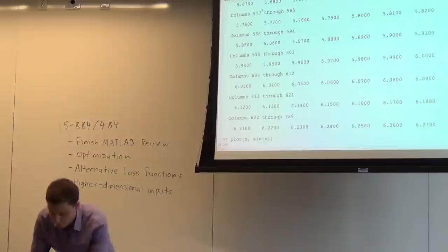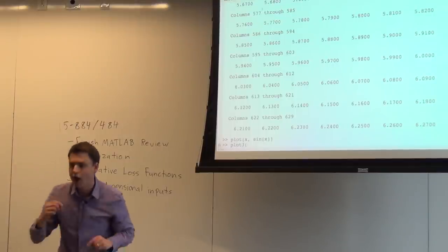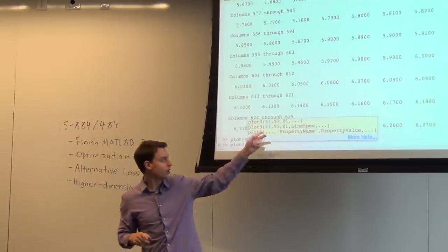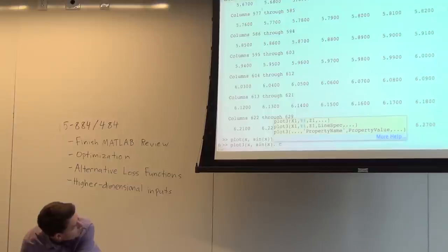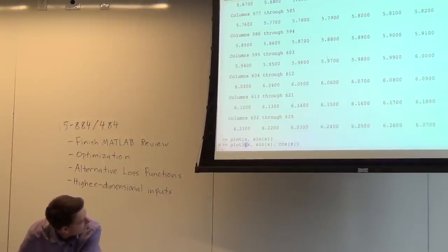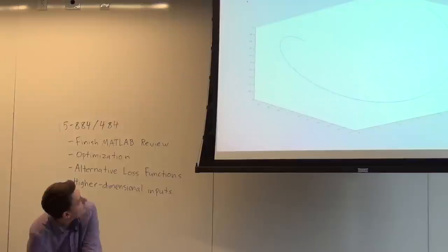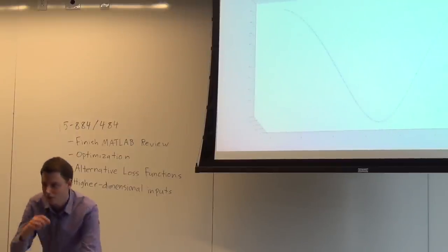You can also do three-dimensional plots. plot3 draws a 3D line — it's not for drawing surfaces, it's for drawing lines in 3D. You give it the x, y, and z coordinates of that line. For example, plotting x, sin(x), and cos(x) gives a parametric plot in 3D — it looks like a sine wave from one angle, a circle from another, and a cosine from another.